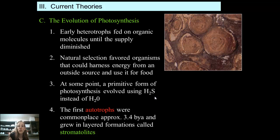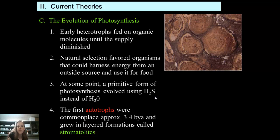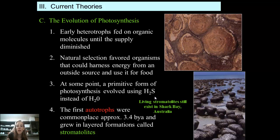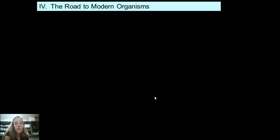These early autotrophs grew in layered formations called stromatolites. They were making their own food by photosynthesizing hydrogen sulfide, which was abundant in the atmosphere and oceans of early Earth. We still find stromatolites in Australia. Although they look like rocks, they're actually living cells that are cemented together.